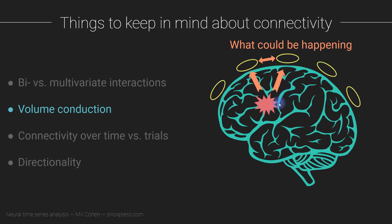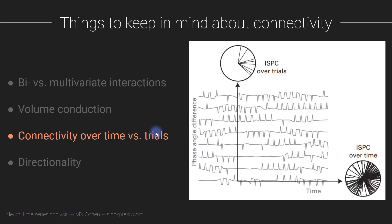In the next video I'll talk more about this issue of volume conduction and what are some different ways to either avoid having to worry about it or do qualitative and quantitative inspection of results to determine whether your synchronization between two electrodes actually reflects true connectivity or spurious volume conduction. Now I want to talk about connectivity over time versus connectivity over trials. When you have a task-related design, there are two different ways of estimating synchronization. You can compute synchronization over time — that gives you one estimate over a block of, say, one or two seconds.